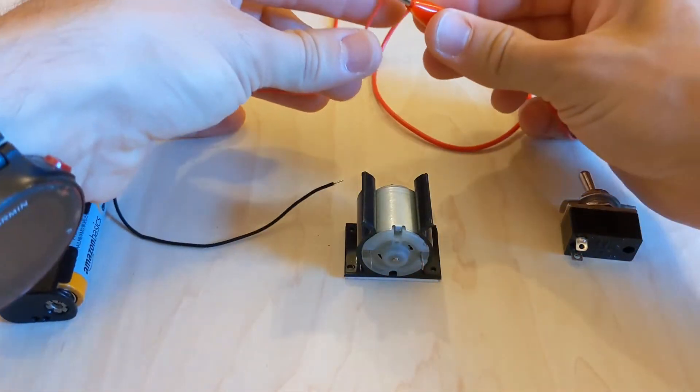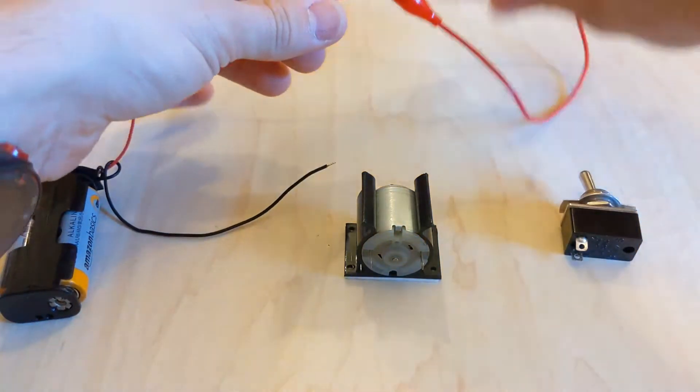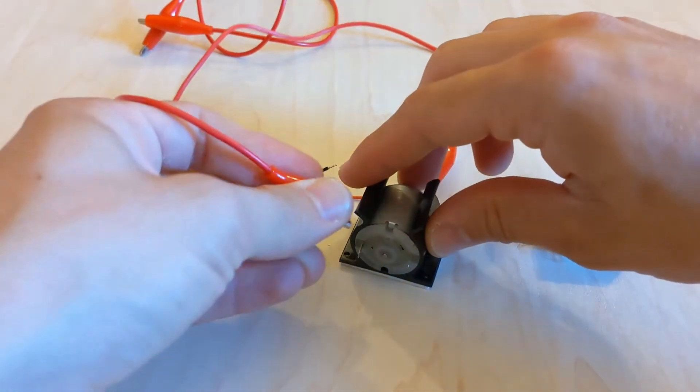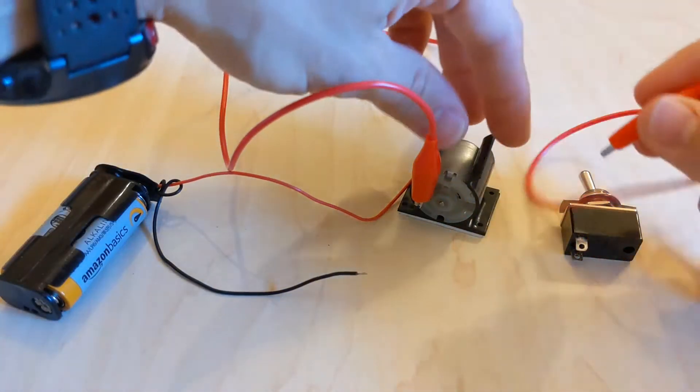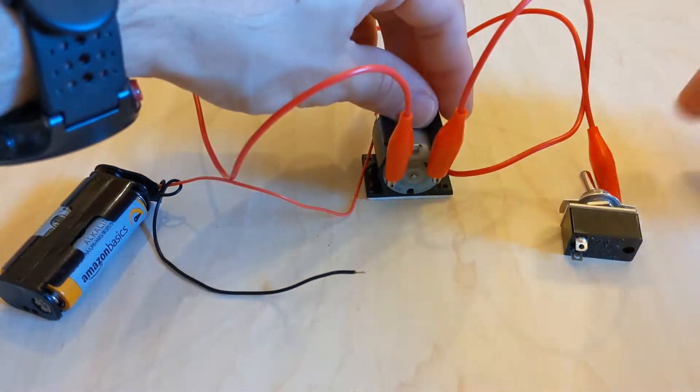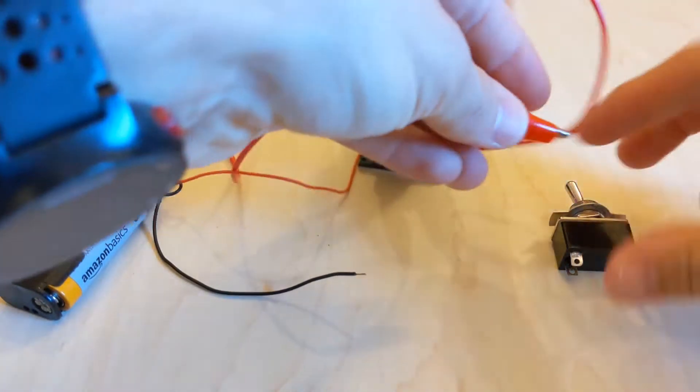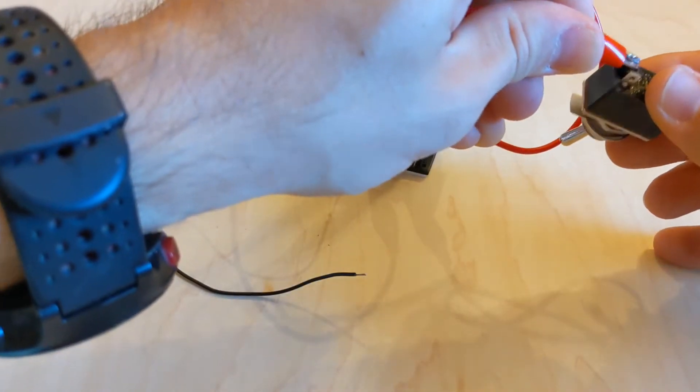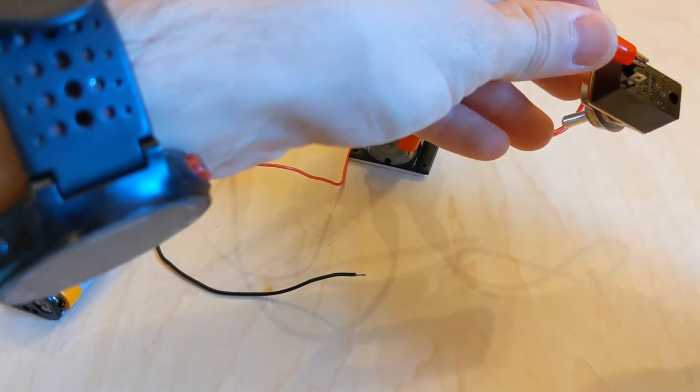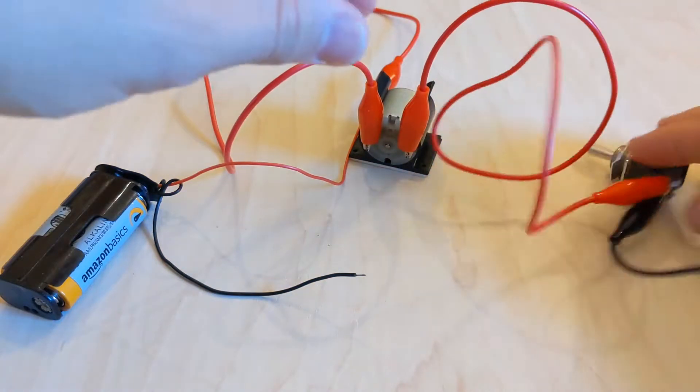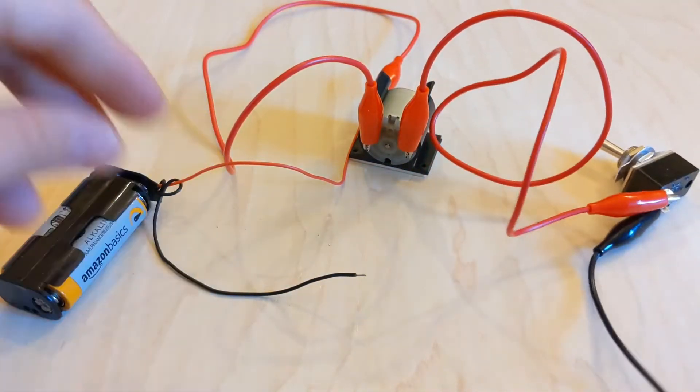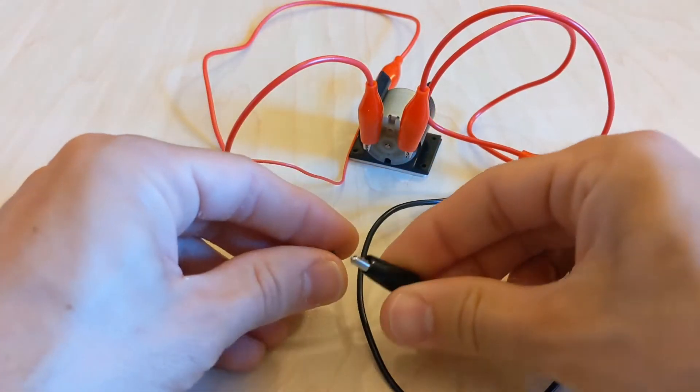Now it's time to test out the circuit. Using the crocodile clips, connect the circuit together as shown in the instructions. The battery pack connects to one terminal on the motor, the other motor terminal connects to one of the terminals on the switch, and the other switch terminal connects to the black wire on the battery pack, completing your circuit.